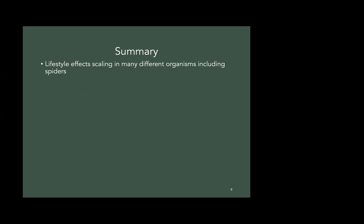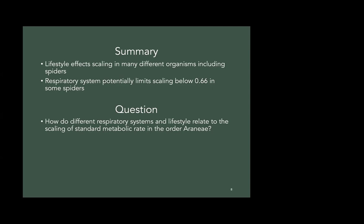So in summary, lifestyle affects scaling in many different organisms, including spiders. And respiratory system potentially limits scaling below 0.66 in some spiders. So my question is, how do different respiratory systems and lifestyles relate to scaling? And my hypothesis is that differences in lifestyle and respiratory structures together will affect the scaling in different groups of spiders.